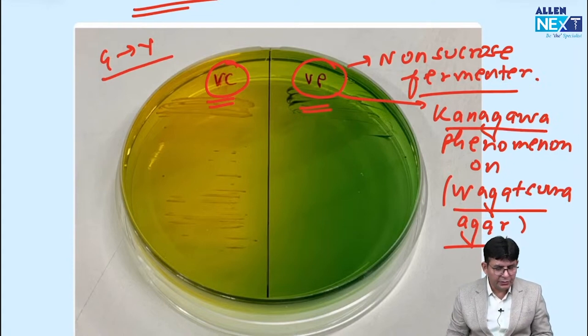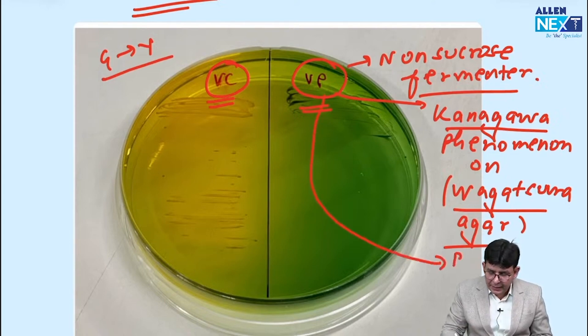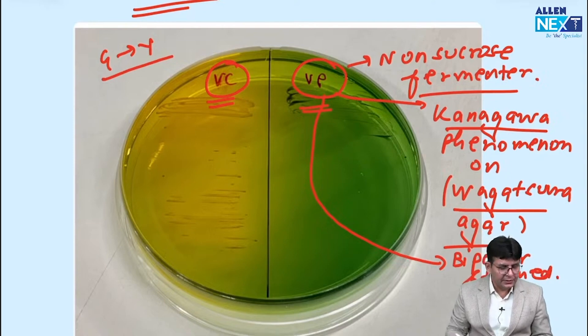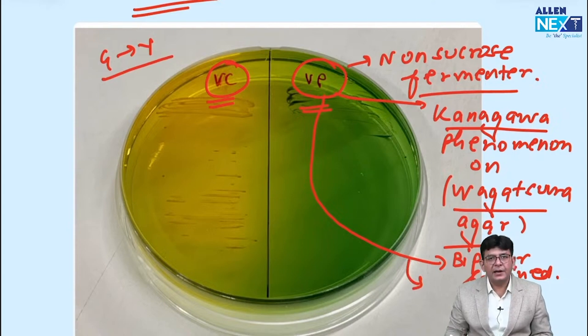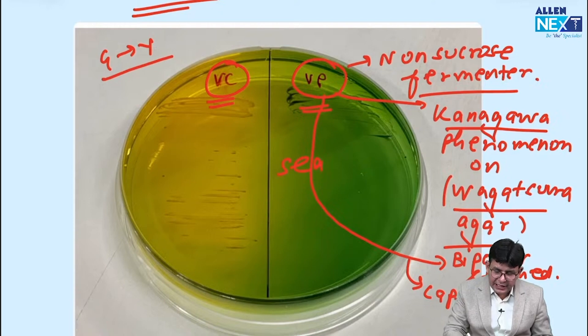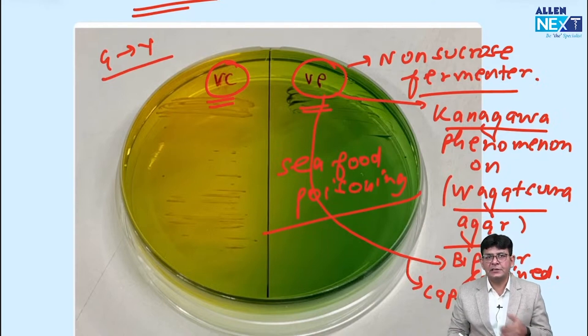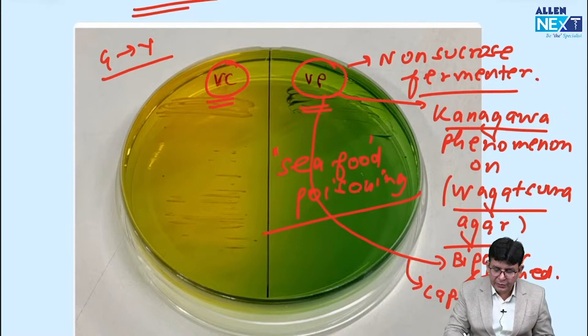Kanagawa is what? Enhanced beta hemolysis. And as Aditi told, Vibrio parahemolyticus, this particular one is like bipolar. It is a bipolar stained organism. It is a bipolar stained organism and this particular one is capsulated also. And this associates with seafood poisoning. Seafood poisoning and how much percent halophilic it is? Seven percent halophilic.